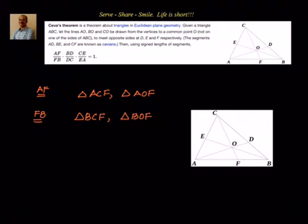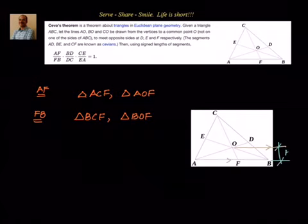Now let us consider triangles AOF and BOF. Triangles AOF and BOF are on the same line AB and between the same parallel lines. If I draw a line through O parallel to AB, then I can say that this height is equal to H1. Then we can say that area of triangle AOF divided by area of triangle BOF is equal to AF/FB, because their altitude with respect to bases AF and FB is the same — that is H1.